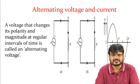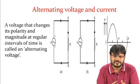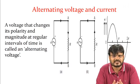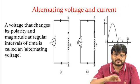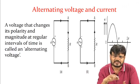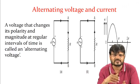Now, starting from the very basics of AC — we first need to understand what is alternating voltage and current. It is called alternating because the polarity of the voltage changes in positive and negative cycles.